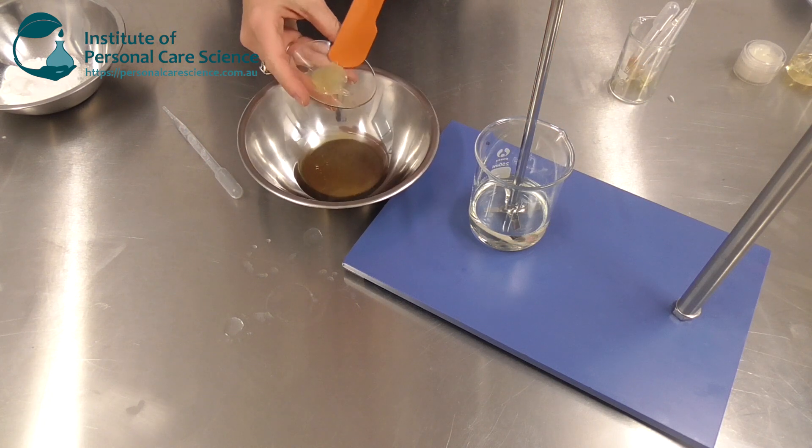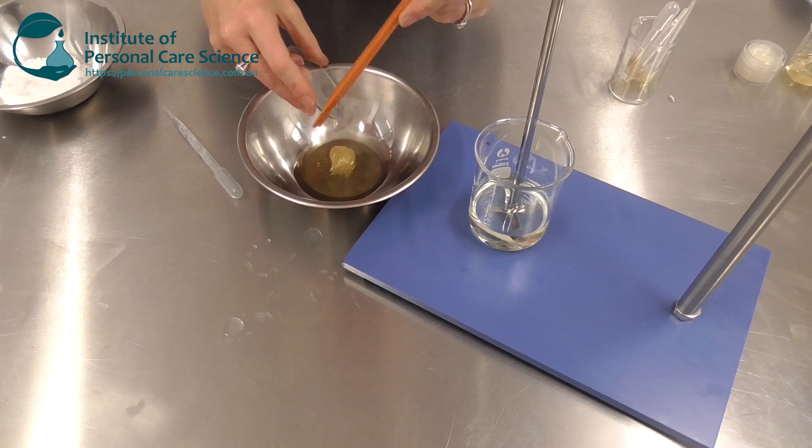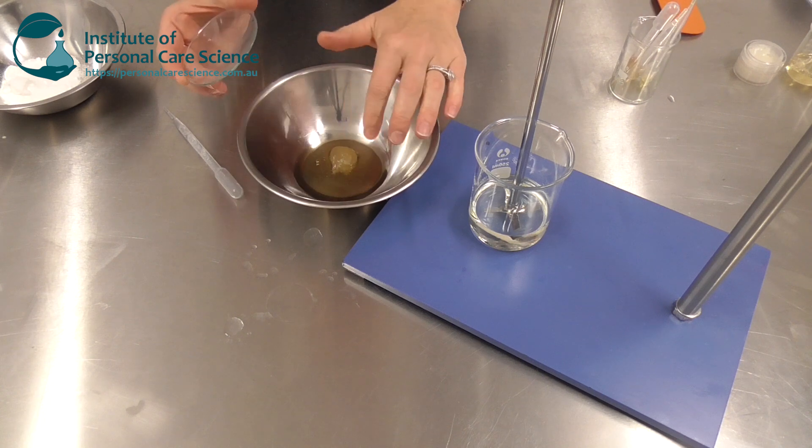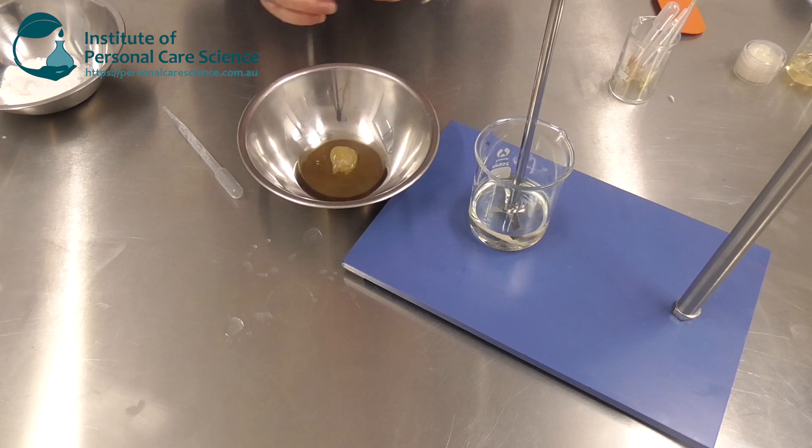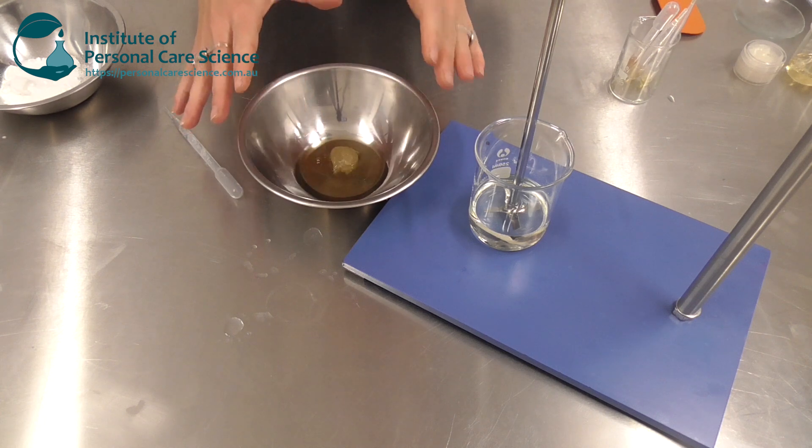To this I am adding a super-fatting material, I'm using the Lamasoft PO 65. Now this particular material is more water loving. This is what helps it turn into a milk when water is added and also helps the product wash away.